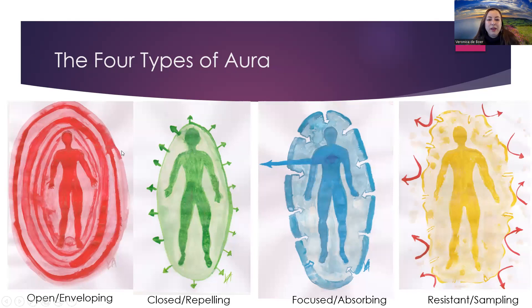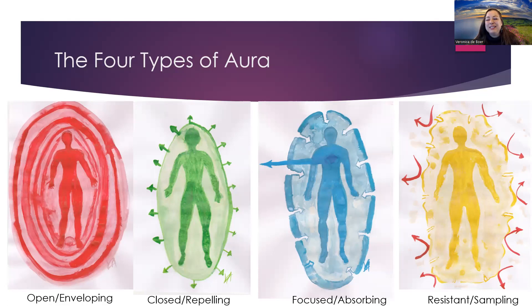Let's look at the auras. We have the Generator aura, which is open and enveloping. It is a very buzzy, warm, and fuzzy aura — Ra called it a 'fuzzy bunny' aura. It is very open and it really envelops people in it like a warm hug. This aura is not protected; it is open for impact, open for influence, open for conditioning, and hence the strategy is to wait to respond — to wait for the universe to come.